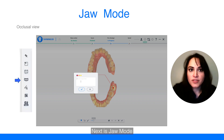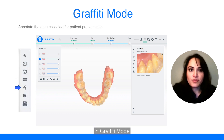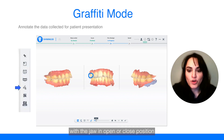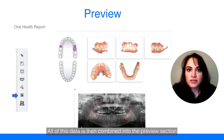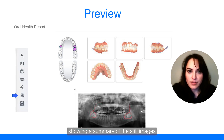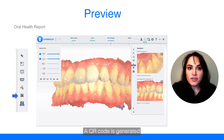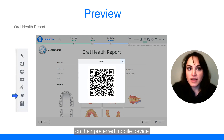Next is jaw mode. This provides an occlusal view and editing options mentioned previously. In graffiti mode, the clinician can mark the scan in freeze frame with the jaw in open or closed position. All of this data is then combined into the preview section. When selected, you can see the full report showing a summary of the still images taken and the notes made on every option reviewed. Go through this in detail with your patient as the clinical exam is performed. A QR code is generated, allowing the portability of the information provided to your patient on their preferred mobile device.